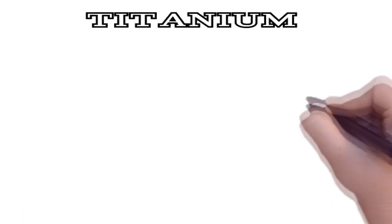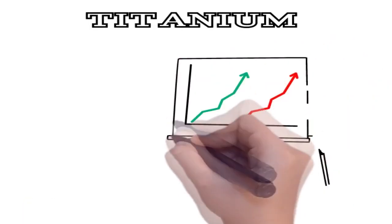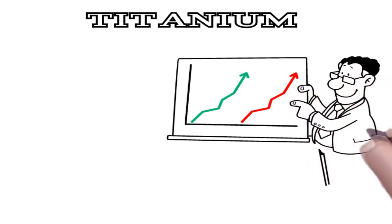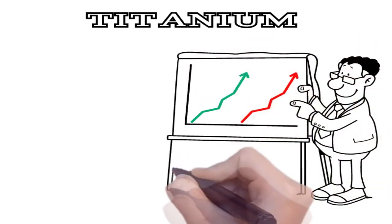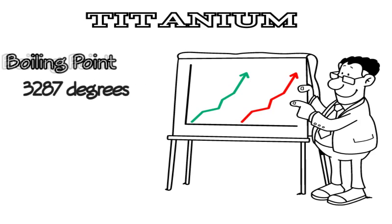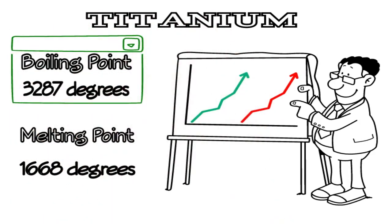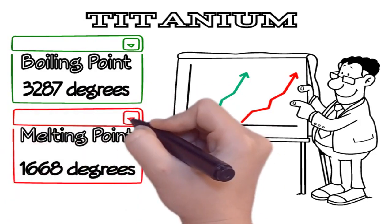Due to its metallic properties, titanium has high boiling and melting points. The boiling point of titanium is 3,287 degrees Celsius while the melting point is 1,668 degrees Celsius.